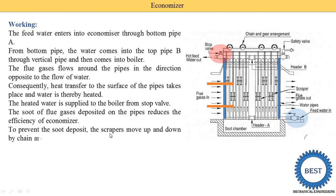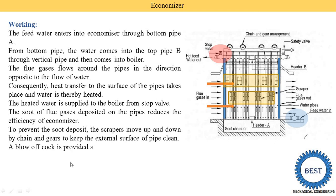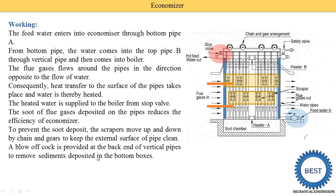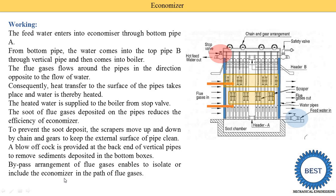The soot of the flue gases deposited on the pipe reduces the efficiency of the economizer, because soot sticking on the pipe reduces the heat transfer coefficient. That is why scrapers are installed. To prevent soot deposit, the scrapers are moved up and down by the chain and gear arrangement, removing the soot from the pipes. A blow-up cock is provided at the back of the vertical pipe to remove sediment deposited in the bottom box and to empty the economizer. A bypass arrangement for the flue gases enables isolating or including the economizer, allowing control of the amount of flue gases passing through it, with the rest bypassed directly to the chimney.